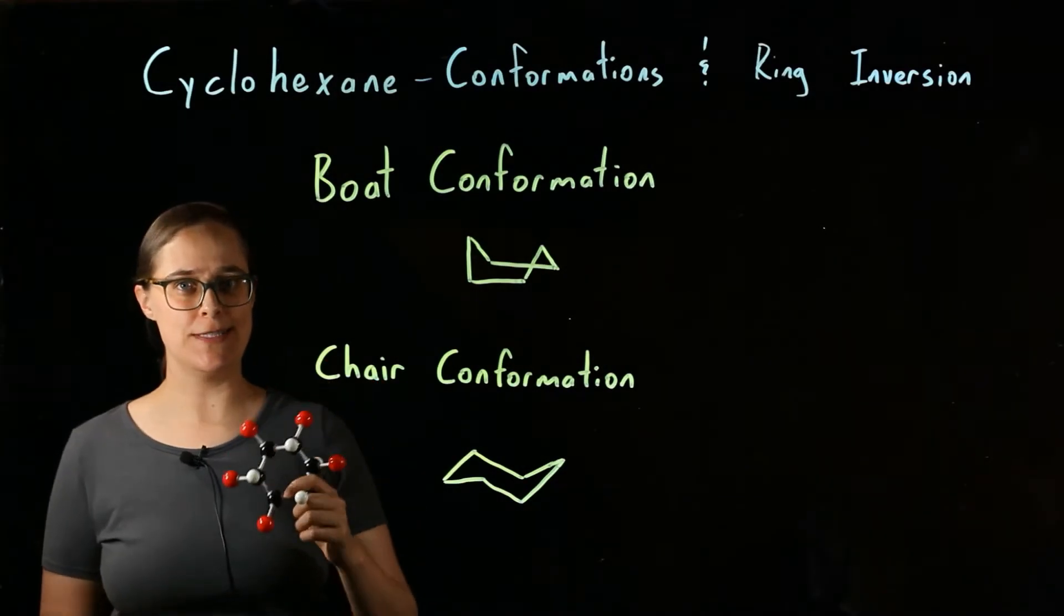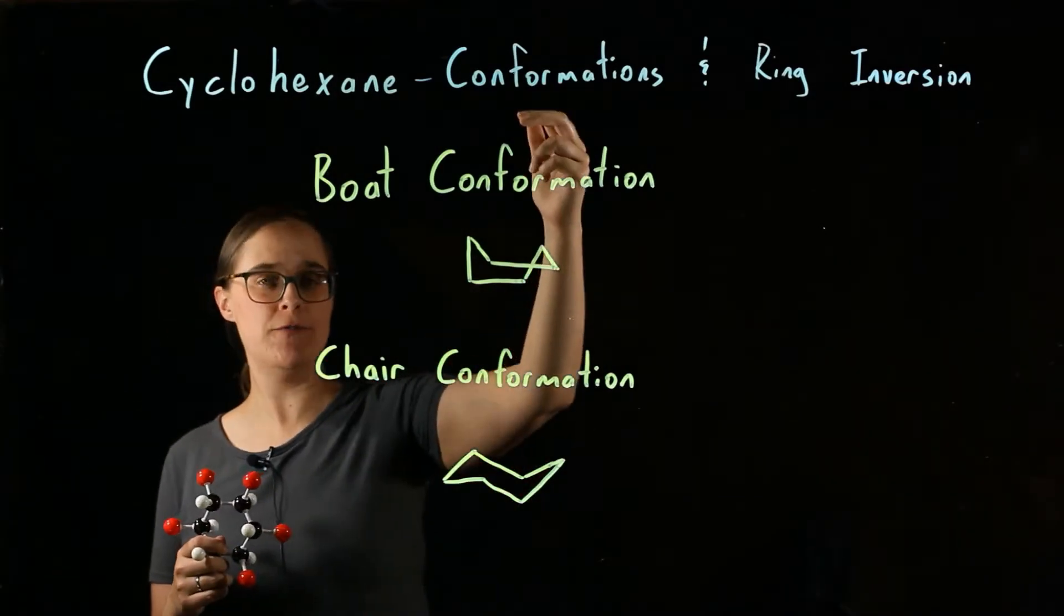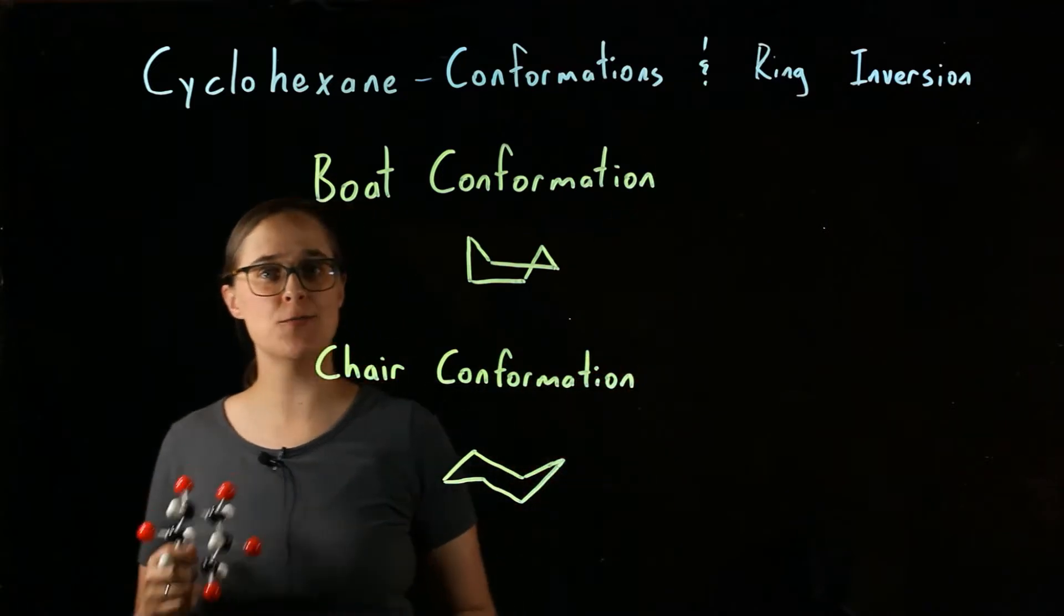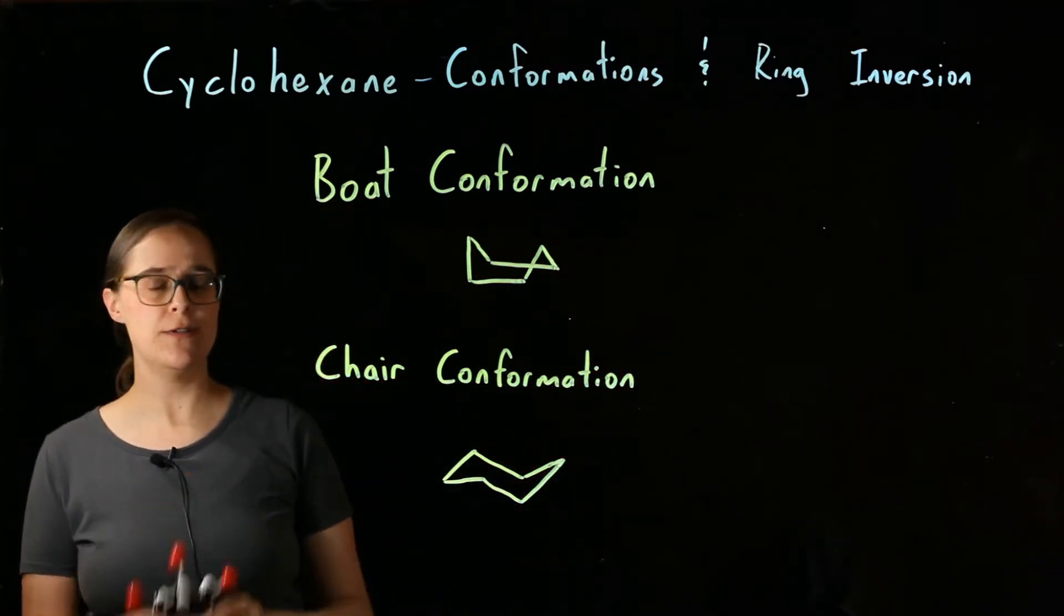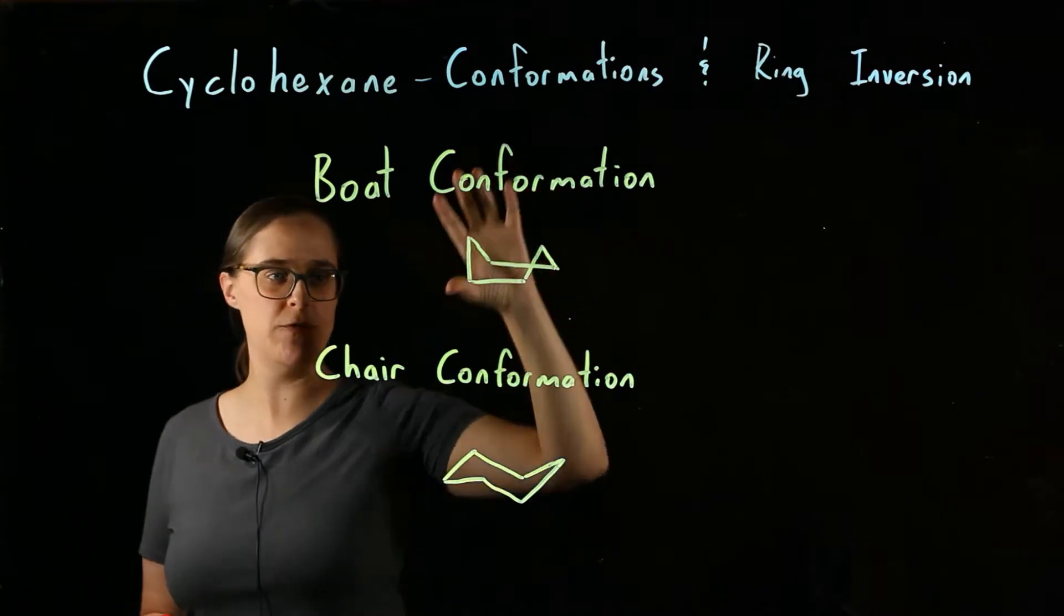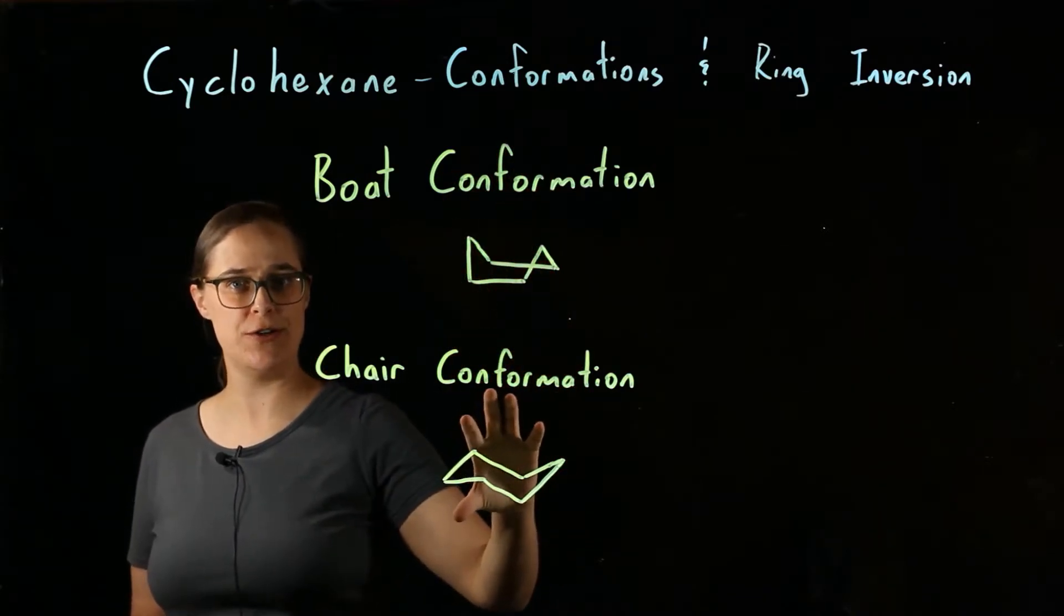This is a video about cyclohexane. I'm going to be talking about its conformations and a process called ring inversion. So there are two main conformations: one is called boat conformation, the other is called chair conformation.